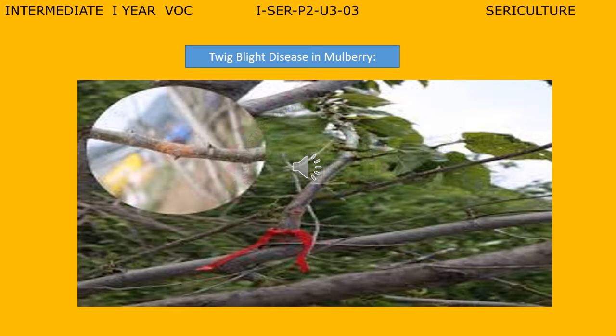Looking at the diagram of twig blight disease in mulberry: when we see the surface of the plant, in the initial stage, leaves show marginal blackening or burning, and at a later stage, complete burning and defoliation. The affected twigs become feeble and fragile with irregular black longitudinal patches on the stem surface. Further, these lesions result in the splitting and drying of twigs. Buds become rotten.